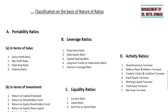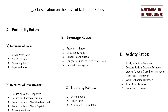If we do classification on the basis of nature of the ratios, there will be four categories. First is profitability ratios, which disclose the relationship of profit against sales and investment. This category covers gross profit ratio, net profit ratio, operating ratio, and expense ratio. In terms of investment, we can find return on capital employed, return on shareholders' fund, and return on equity shareholders' fund.